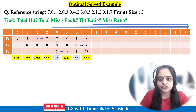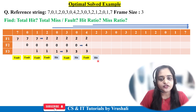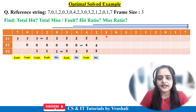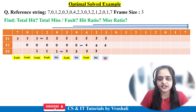Next is page 2 — already present in main memory, so page hit. Write down the data as it is: 2, 4, 3. Next is page 3 — also already present in main memory, so page hit again. Write down the data as it is.